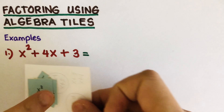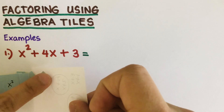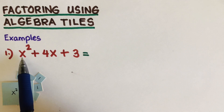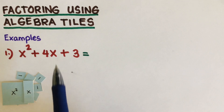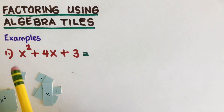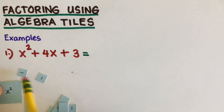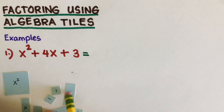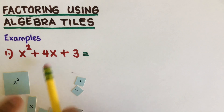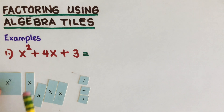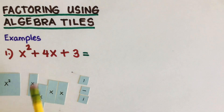In this problem right here, as I mentioned in the other video, this is actually the area as a sum. What I have here are these tiles: one x squared tile, four x's, and three ones.